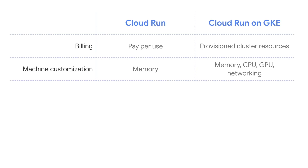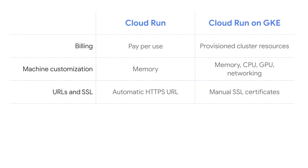With Cloud Run, you get one CPU and can customize memory. Cloud Run on GKE lets you change memory, GPU, or CPU requirements. A URL is automatically generated for your HTTP service and an SSL certificate is provided automatically when you use Cloud Run. For Cloud Run on GKE, you may need to provide your own domain name and handle SSL certificates manually.